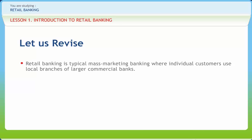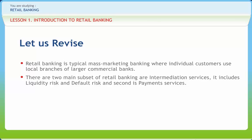Let us briefly revise what we have studied. Retail banking is typical mass market banking where individual customers use local branches of larger commercial banks. Retail banks offer a range of services to individual customers and small businesses rather than to large companies and other banks. There are two main subsets of retail banking: intermediation services — which include liquidity risk and default risk — and payment services. Liquidity risk relates to the risk of the bank having insufficient funds to meet its cash outflow commitments. Assets held by retail banks are advances, which are subject to the risk of default or credit risk.